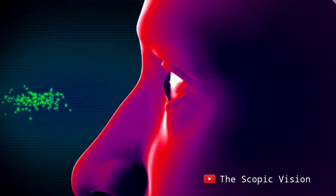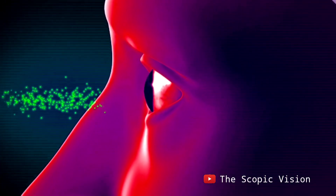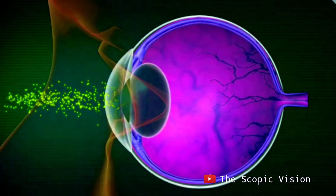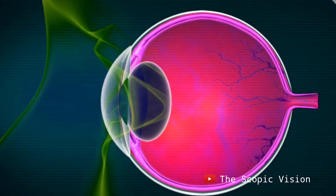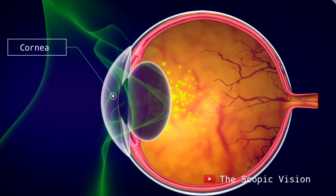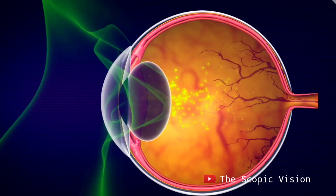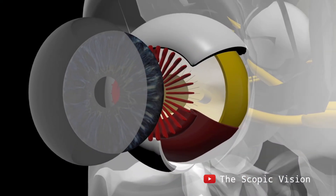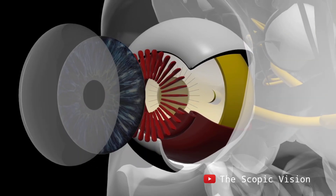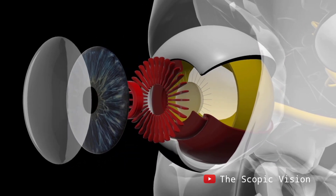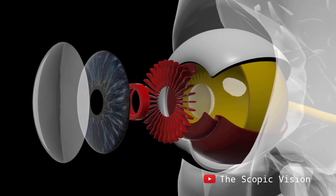There are three layers of tissues present in the eye. The outermost layer is fibrous, with the cornea maintaining the shape of the eye. Present in the outer layer, the cornea allows light to enter and refracts it due to its convex shape.